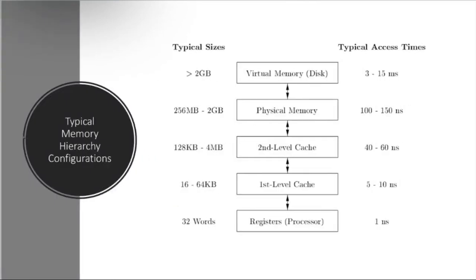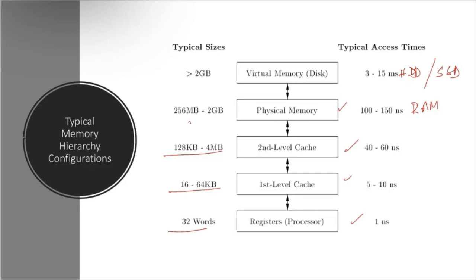Looking at typical memory hierarchy configurations in a program, we have registers, then first-level cache, second-level cache, physical memory (RAM), and then virtual memory on the hard disk — HDD or SSD. This is the memory hierarchy. I won't discuss the typical sizes in detail here since you've already studied all of this in operating systems in great detail.